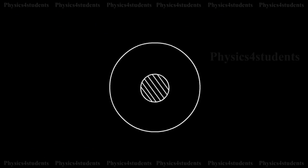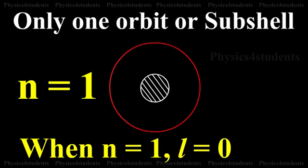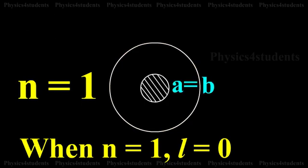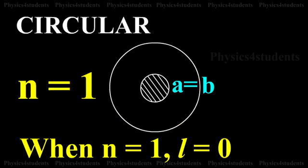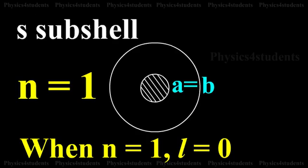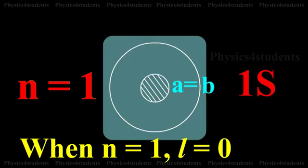Consider the first energy level, n=1. When n=1, l is equal to 0. That is, in this energy level there is only one orbit or subshell for the electron. Also, when a is equal to b, the two axes of the ellipse are equal, and as a result the orbit corresponding to n=1 is circular. This subshell is designated as the s subshell, and since it belongs to n=1, it is designated as 1s.